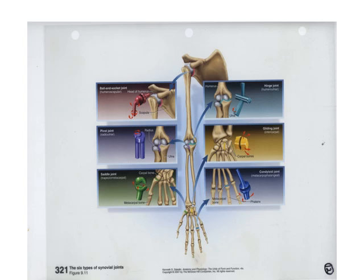The hinge joint is found in joints that flex and extend. The elbow is a good example — a rounded process fits into a trough of another bone. Interphalangeal joints between the fingers and the elbow are good examples. The pivot joint has a rounded end of one bone going into a sleeve, usually allowing only uniaxial movement, like between the axis and the dens, and also the proximal radioulnar joint.